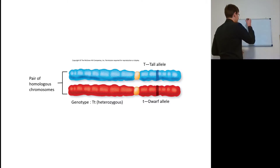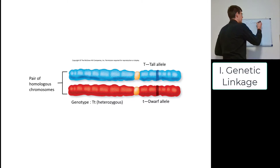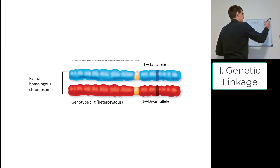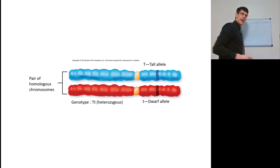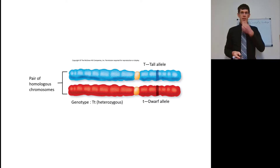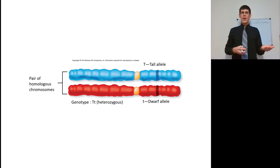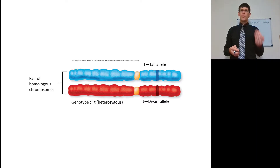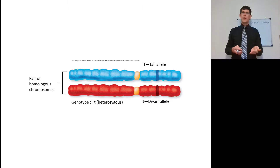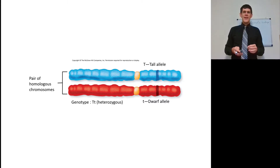So, genetic linkage. We are going to be looking at some genes that are together on the same chromosome. We have here a gene for a tall allele for pea plants — an allele for tall and an allele for short. These are going to have different alleles on homologous chromosomes. This should sound familiar from Bio 141.